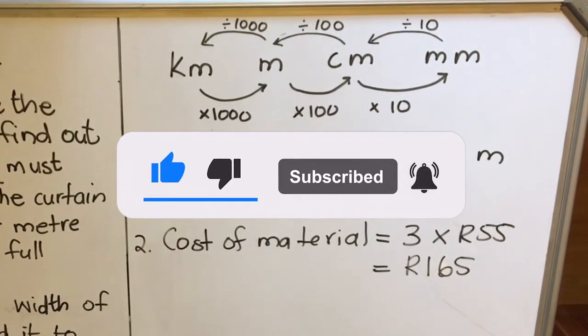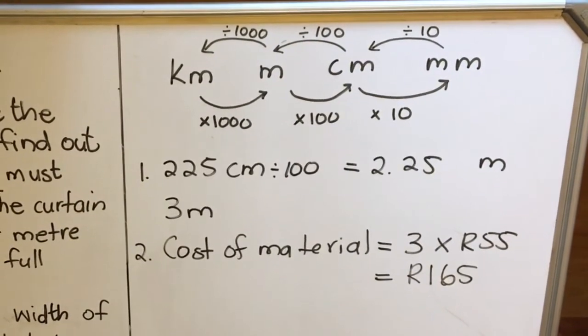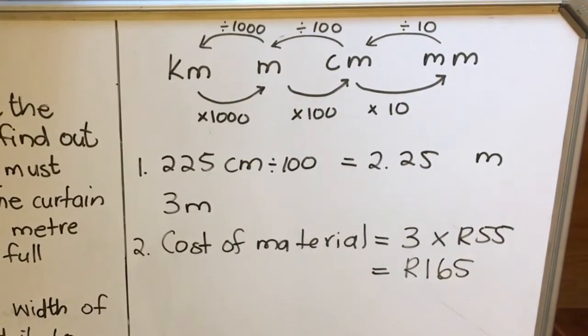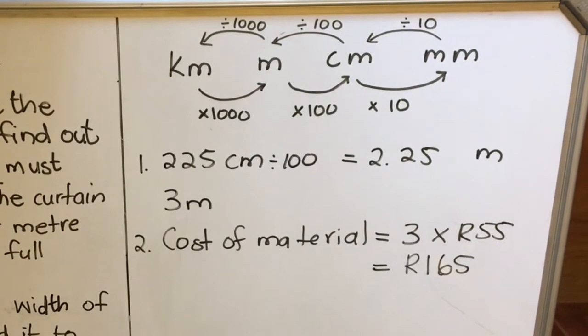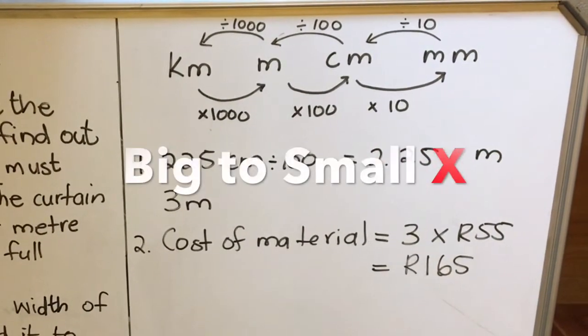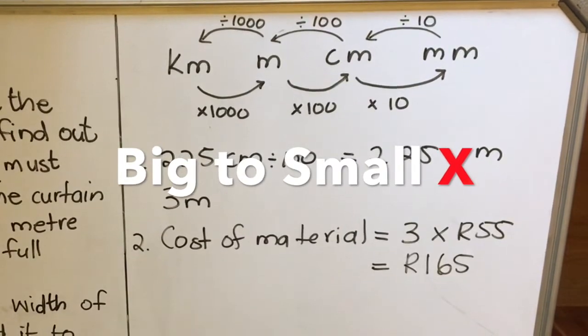Kilometer, meter, centimeter. From kilometer to meter, 1000. From meter to centimeter, 100. From centimeter to millimeter, 10. And then from a smaller one to a bigger one you divide. From bigger one to smaller one you multiply.